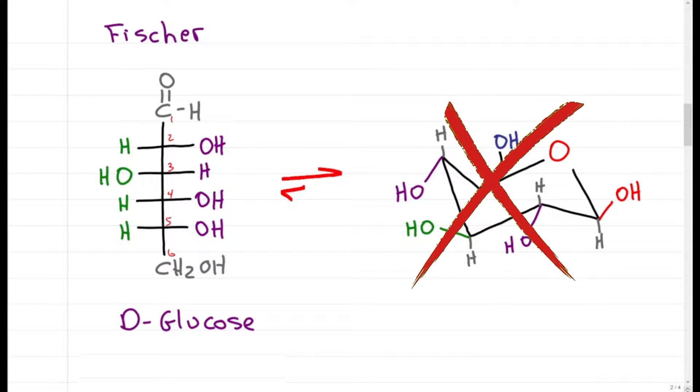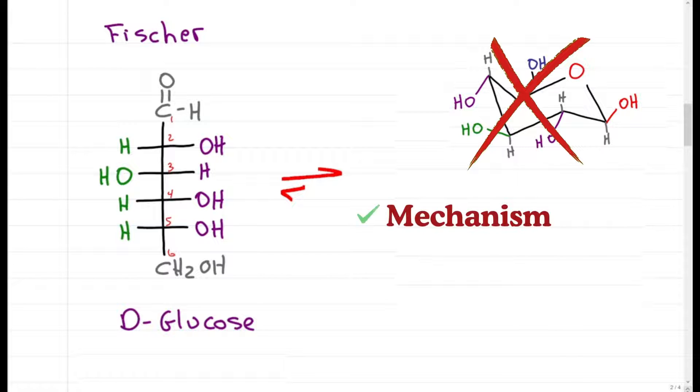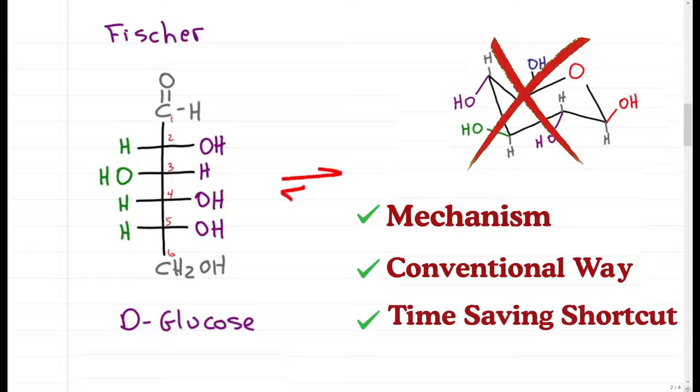But chairs are so annoying to draw. Luckily, you get to draw the flat ring or Haworth projection. So let's look at the mechanism, the conventional way to draw it, and yeah, I also find it confusing, then my time-saving shortcut.